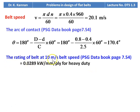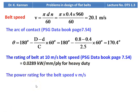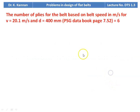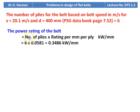Rating of the belt at 10 m/s for heavy duty: 0.0289 kW/mm/ply. Power rating for calculated belt speed = 0.0289 × (20.1 / 10) = 0.0581 kW/mm/ply. Number of plies: for V = 20.1 m/s and d = 400 mm, from page 7.52 we take 6 plies. Power rating of the belt = 6 × 0.0581 = 0.3486 kilowatt per millimeter.